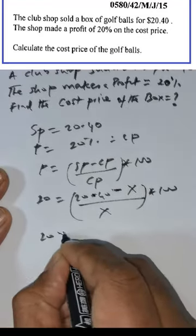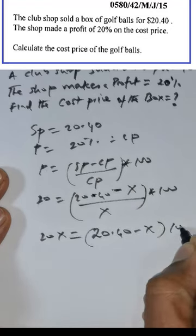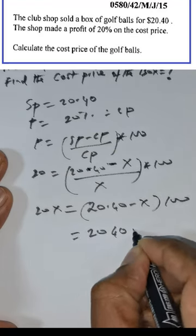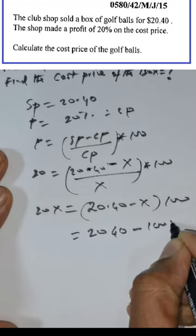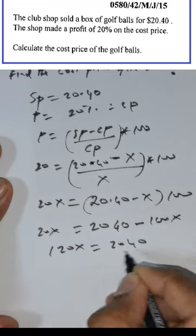So this is going to be 20x is equal to 20.40 minus x times 100. So this is going to be 2040 minus 100 times x. Push this over so you get 120x is equal to 2040.